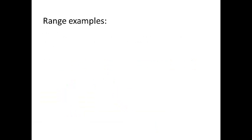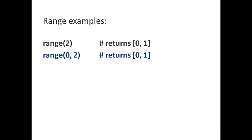Some range examples. So you can see how this works. If you only have one value in the range, it automatically inserts a zero for the from and a one for the step. So range of two is going to return zero and one. Range of zero comma two is going to return exactly the same thing. And a range of zero comma two comma one is going to give you exactly the same return as well.